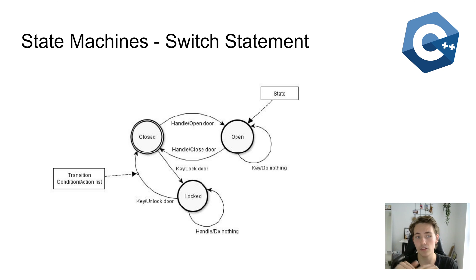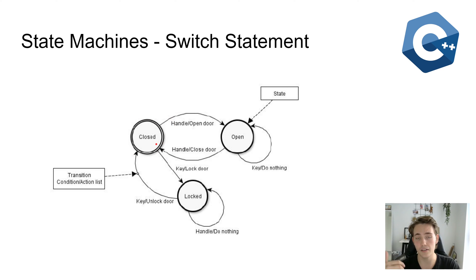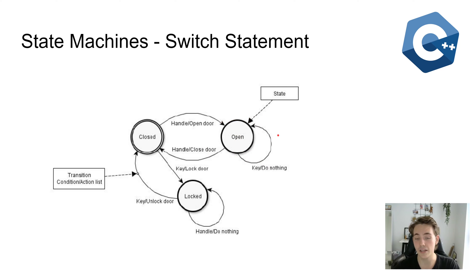Here I have an example of a state machine. We can implement state machines as a switch statement in C++, where a state machine is just these different kinds of states our program can be in. To give you a better overview of what state machines are, we have a door example. We start in the idle state where the door is closed. These circles here are the states the program can be in, and these are the states we can transition between in our switch statement.